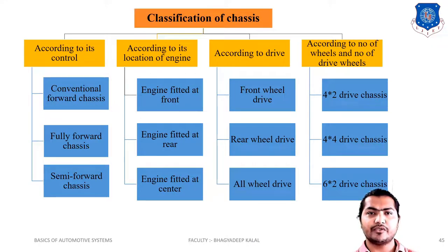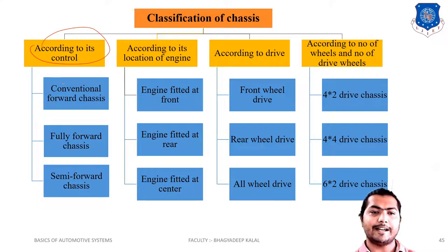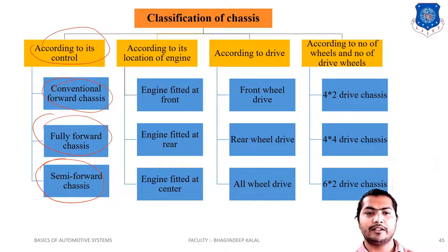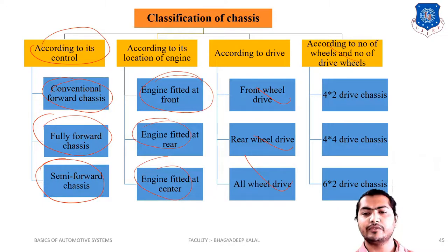Next is the classification of chassis. Chassis are classified according to four types. First, according to its control: conventional, forward, fully forward, and semi-forward chassis. Second, according to location of engine: front engine, rear engine, and mid engine. Third, according to drive: front wheel drive, rear wheel drive, and all wheel drive. Fourth, according to wheels: four by two, four by four, and six by two.